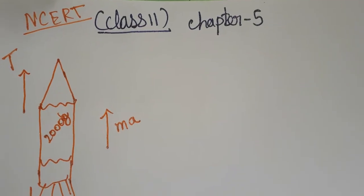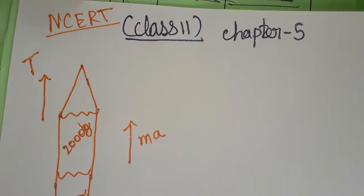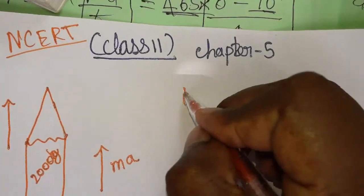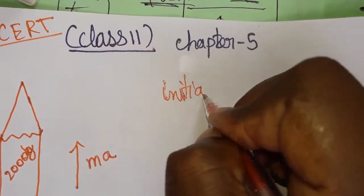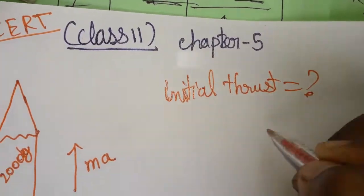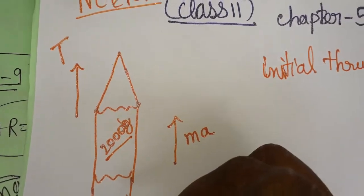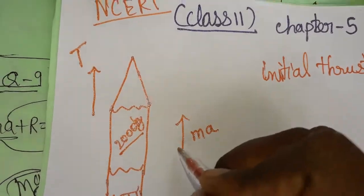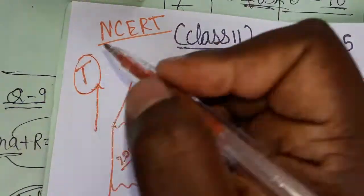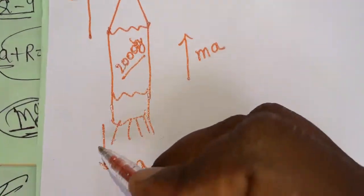Hello friends, today we are going to learn a rocket problem. We need to find the initial upthrust force created in the rocket. The mass of the rocket is 2000 kg and it is going to move upwards. The initial upthrust force acts upwards.